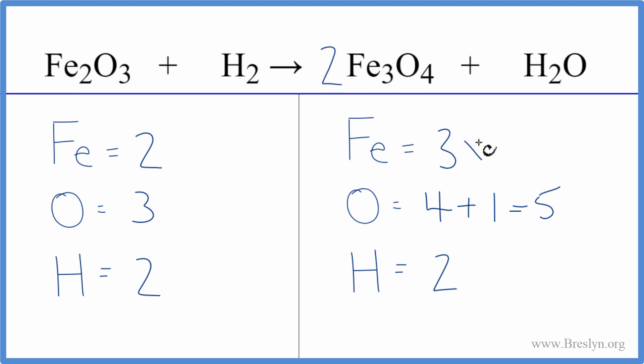Now three times two, that'll give me six. That's helpful. I do need to update my oxygens though. So I have four times two is eight, plus I have the one oxygen here. So I have nine oxygens.